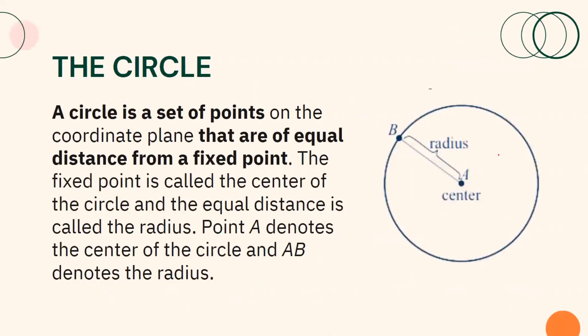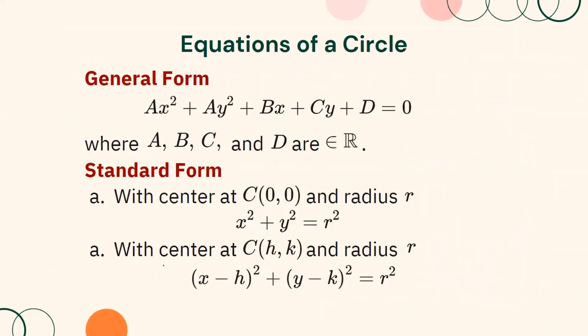In the last video, we defined a circle as a set of points on the coordinate plane that are of equal distance from a fixed point. The fixed point is called the center of the circle and the equal distance is called the radius. Point A denotes the center of the circle and AB denotes the radius. We also learned about the general and standard forms of the equation of a circle, and discussed rewriting equations from general to standard form and determining the center and radius.